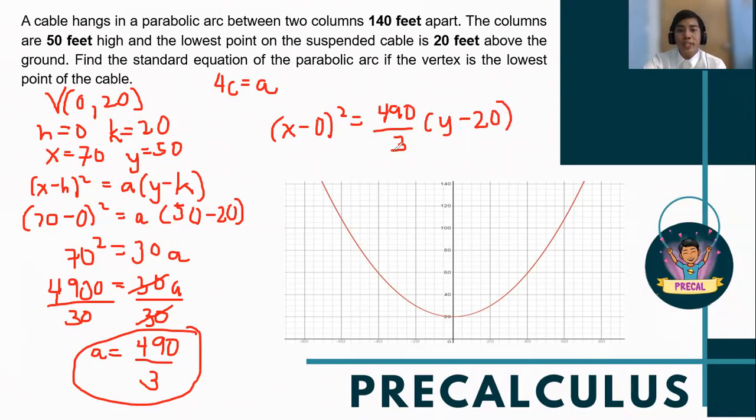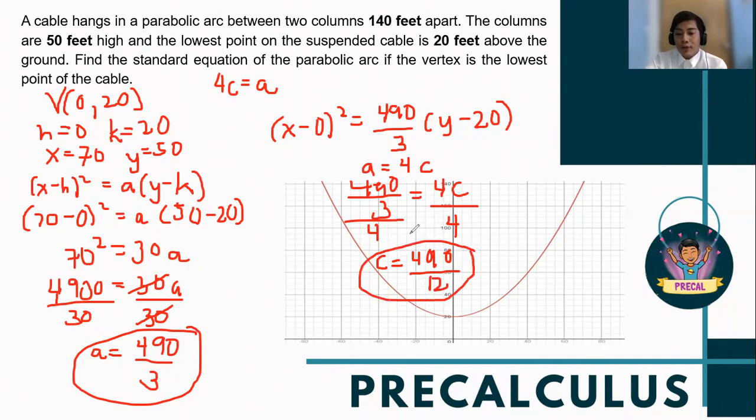Now, how do we obtain the c value? Since a is equal to 4c, 490/3 = 4c. Dividing both sides by 4, the c value now is 490 over 12. If you want to find the c distance, we can still simplify this one. So 490 over 12 can be written as 245 over 6. That's the simplified form.